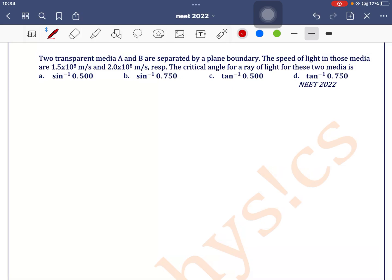Two transparent media A and B are separated by a plane boundary. The speed of light in those media are 1.5 and 2. The critical angle for a ray of light is... Okay, we have two media: medium A and medium